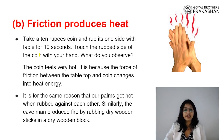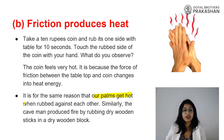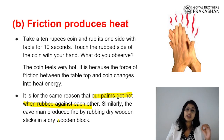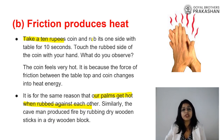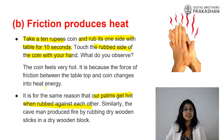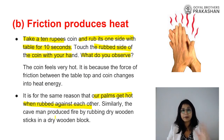When you rub your palms together they get hot because of friction. Here is another example: take a 10 rupee coin and rub one side on a table for 10 seconds, then touch the rubbed side. You will find it is very hot — it can be even hotter if you rub it longer, so be cautious.